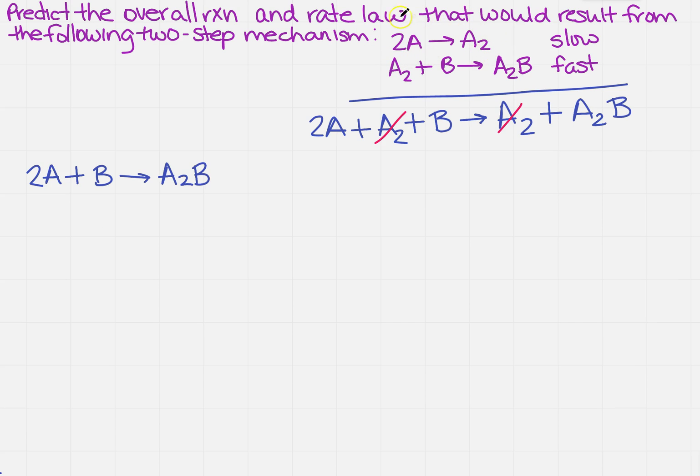And so the slow step only has A's in it, so my rate is going to equal to, and I notice the only thing that's got A's is the 2A term, so I've got my constant times A squared. Remember, coefficients become superscripts in your rate law.